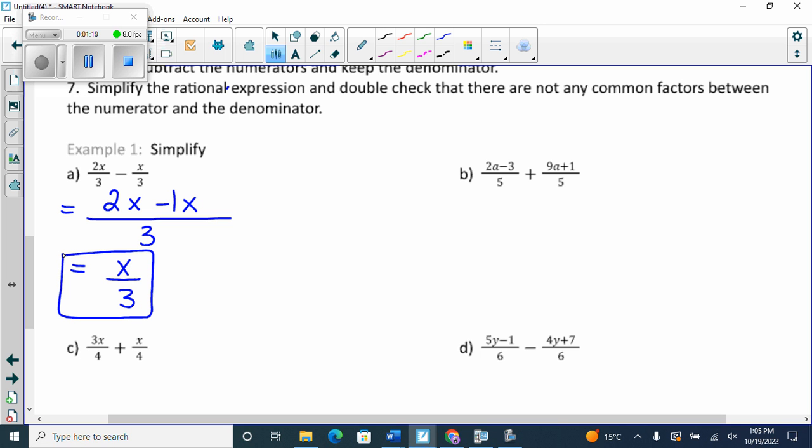So we're going to look at b. b has, the first thing we have to do, it has an addition sign. So the very first thing we need to do when we see an addition sign is we say common denominator. I have to make a common denominator. Oh, I already have one. Perfect. So if I have one, then I can go to step two. Step two is to write them over one common denominator. And I rewrite my whole numerator. So 2a minus 3 plus 9a plus 1.